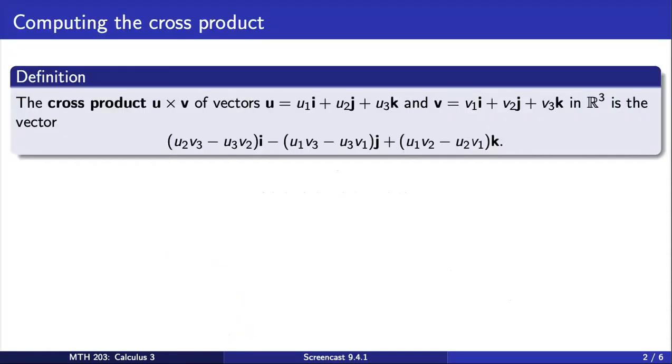The cross product of two vectors u and v in three-space is denoted by the times symbol. The result of this cross product is another vector given by the following expression.